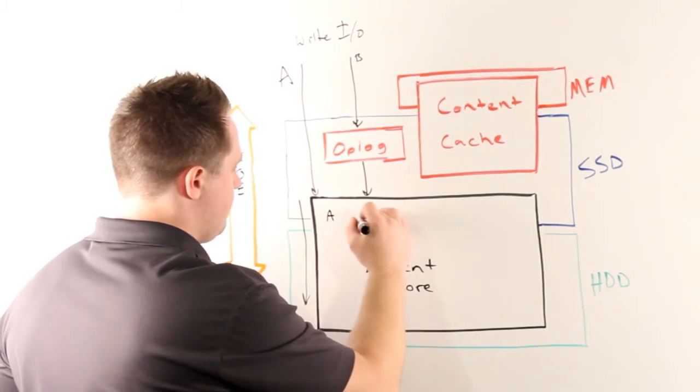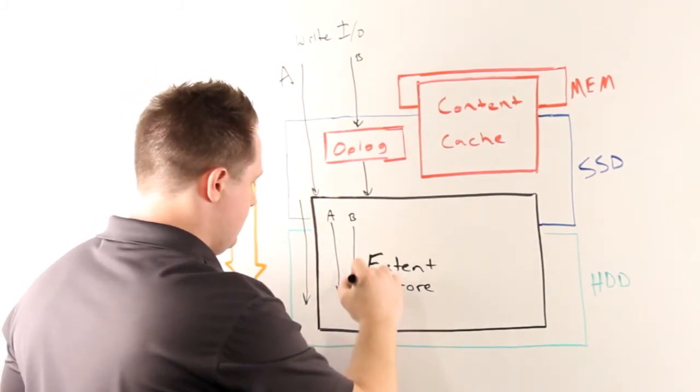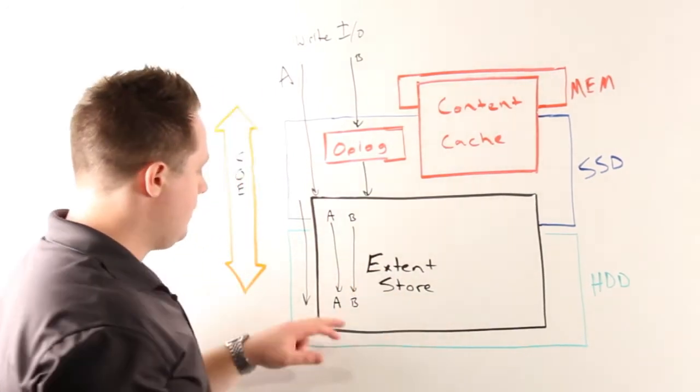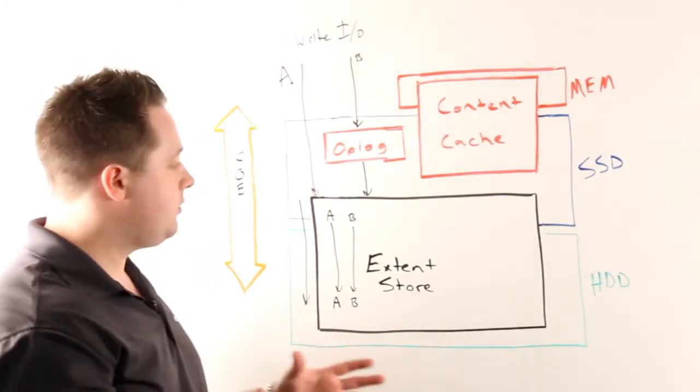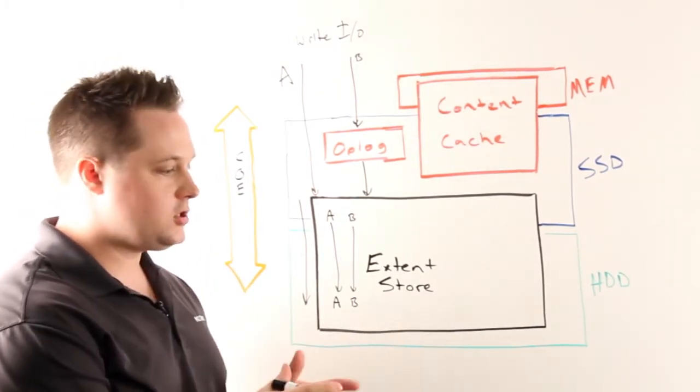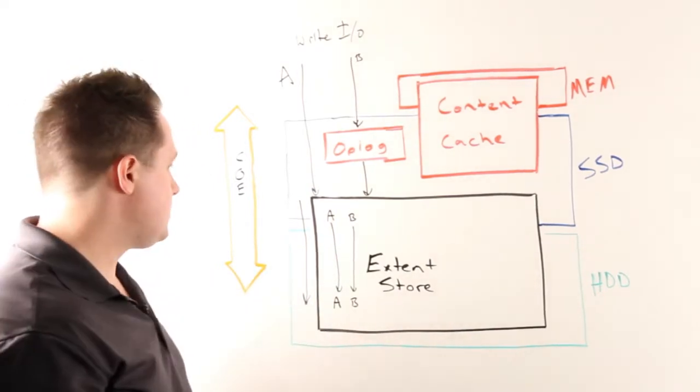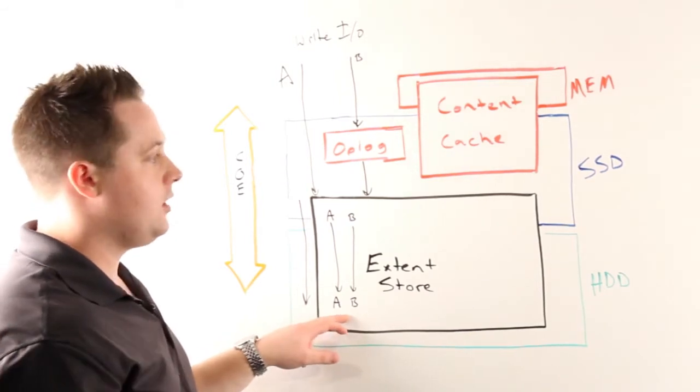If we take our example here, these will be moved down into the HDD portion. From there, we have what we call our post-process compression delay. This is a timer or duration where after that, data is only eligible to become compressed.